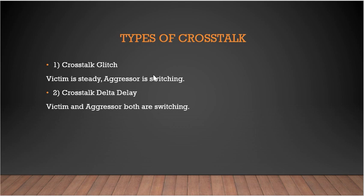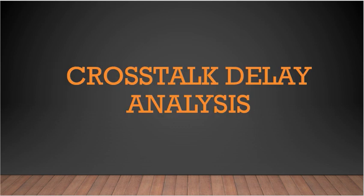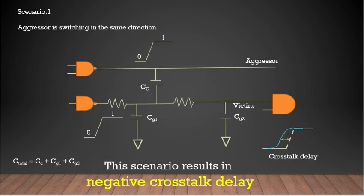As we saw in Part 1, there are two types of crosstalk: one is crosstalk glitch and one is crosstalk delta delay. Crosstalk glitch happens when the victim is steady and the aggressor is switching, and crosstalk delta delay happens when victim and aggressor both are switching. In this video we will see the crosstalk delay analysis, and we will start understanding this through a diagram.